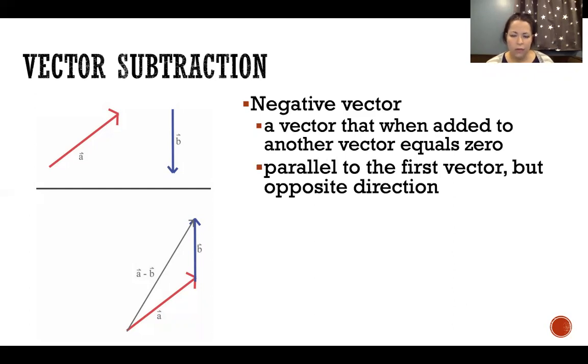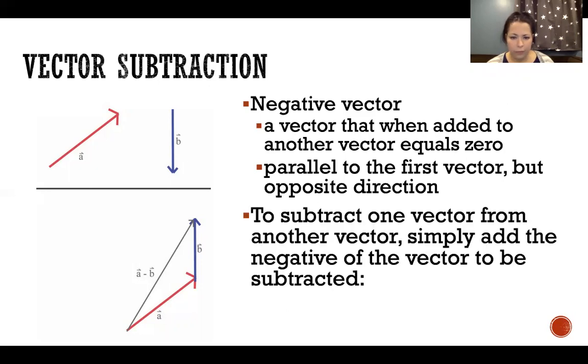It's parallel to the first vector but going the other way. To subtract one vector from another vector, we're just going to add the negative of the vector that we're subtracting. It's like with regular subtraction: if we have 4 - 2 = 2, that's the same exact thing as 4 + (-2) = 2. So instead of doing 4 - 2, we're doing 4 + (-2).